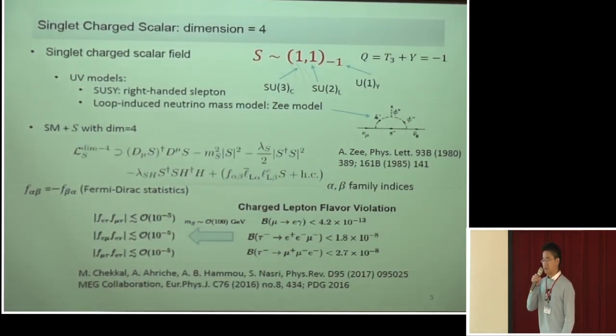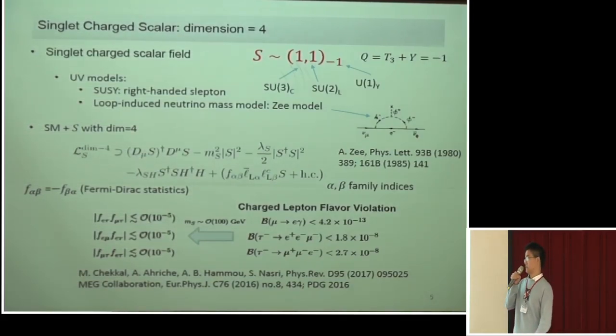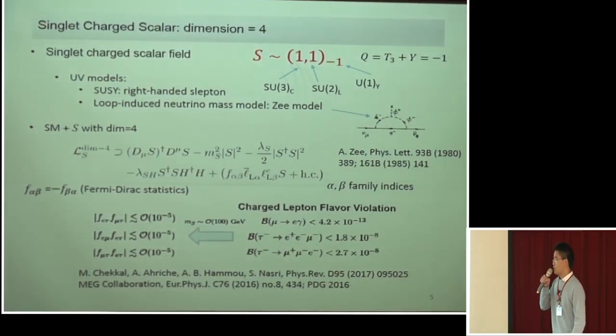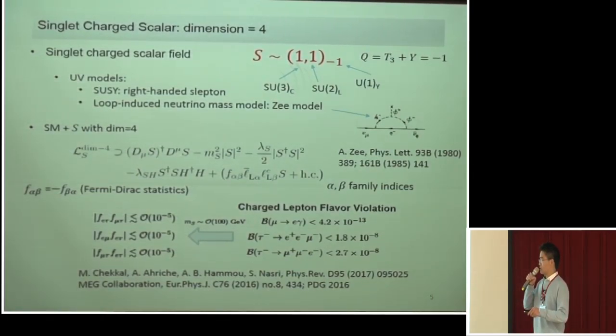While for the singly charged scalar case, we should investigate the experimental search carefully. First, we consider the general singly charged scalar, which is SU3 color singlet, SU2 singlet, while it can carry U1 hypercharge. This singly charged scalar does exist in various models. For example, it can be the right-handed slepton, or it can be the singly charged scalar in the loop-induced neutrino mass model, that is the Zee model. In our case, we assume that the singly charged scalar is only a light degree of freedom.